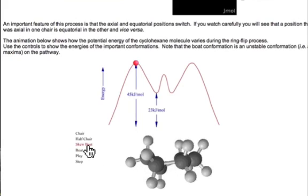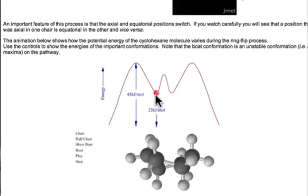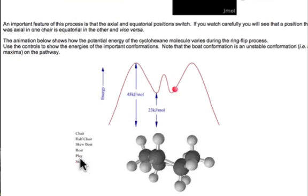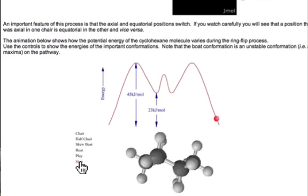We can go to what's here labeled as the skew boat. We've been calling it the twist boat. It's actually a minimum on this potential energy curve. We can keep going on. The boat form is another barrier, and there's the structure of the boat that we've seen before. And if we allow this to play through, we'll get to the ring-flip form eventually. We're back to a chair form that's been ring-flipped.